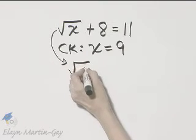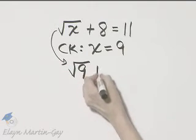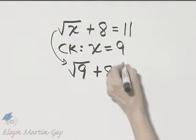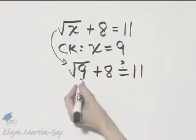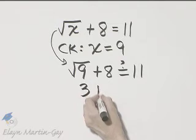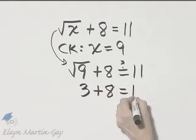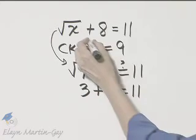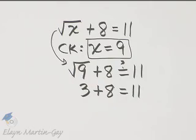If x is 9, I would have the square root of 9 plus 8. Is that equal to 11? Well, the square root of 9 is 3. 3 plus 8 is equal to 11. So it does check and 9 is the solution.